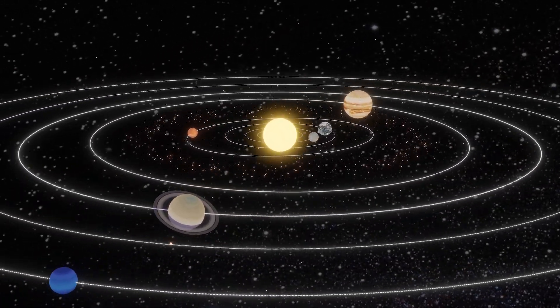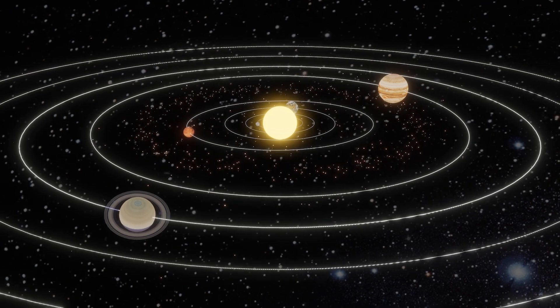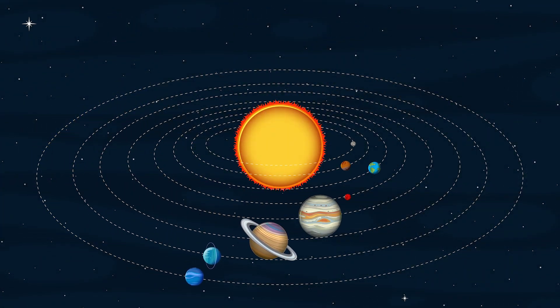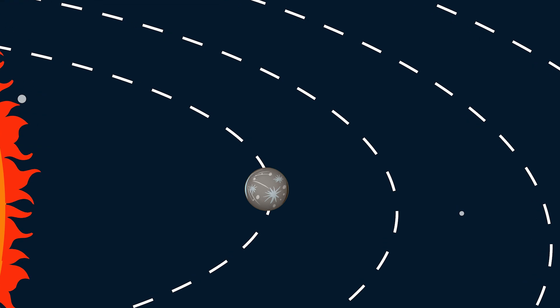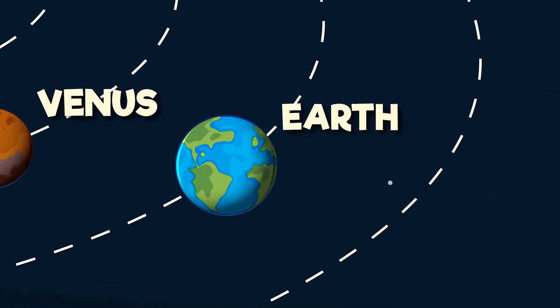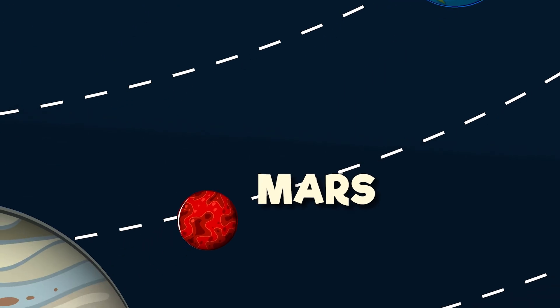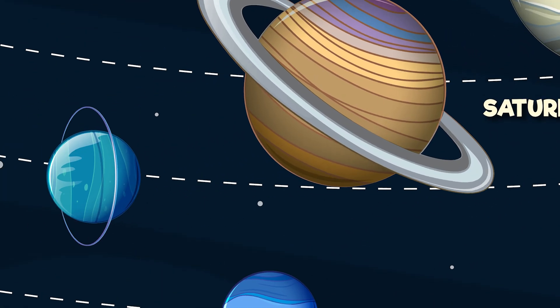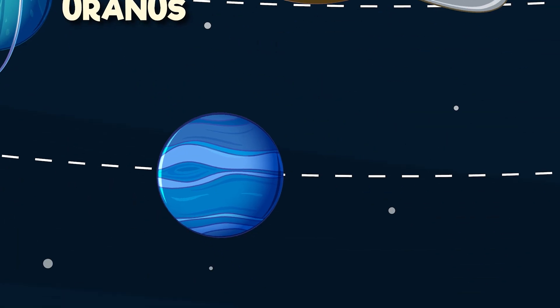Planets are large balls that orbit our Sun. In our solar system, there are eight planets: Mercury, Venus, Earth, Mars, Jupiter, Saturn, Uranus and Neptune.